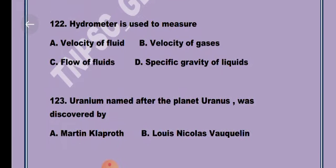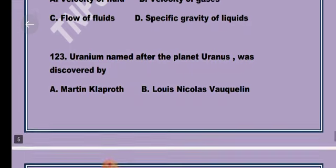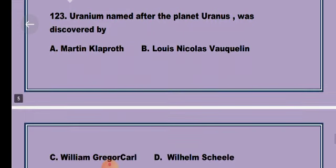Question 23. Uranium, named after the planet Uranus, was discovered by Option A, Martin Klaproth.